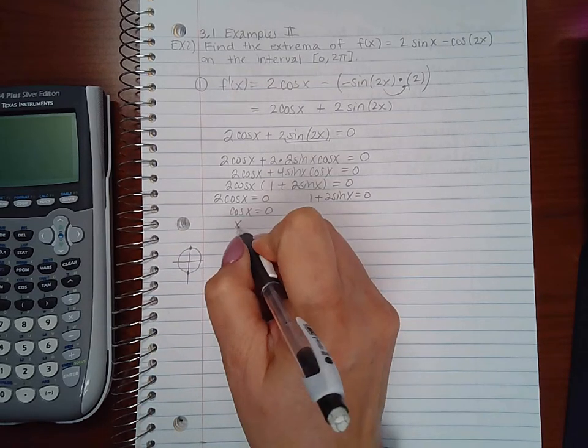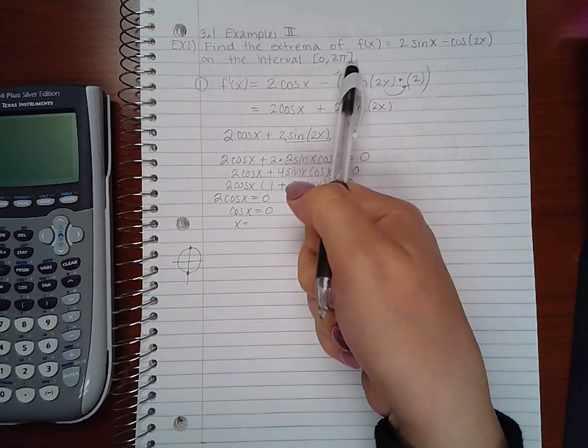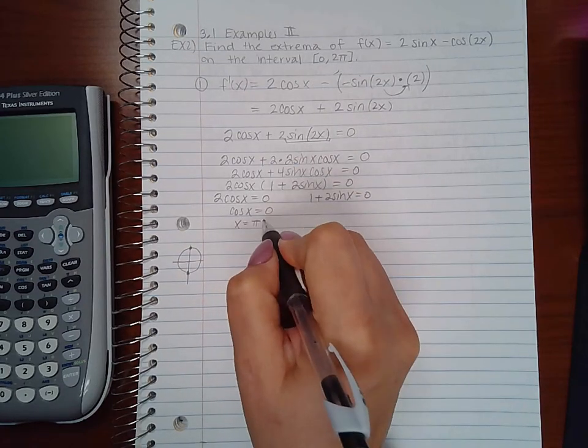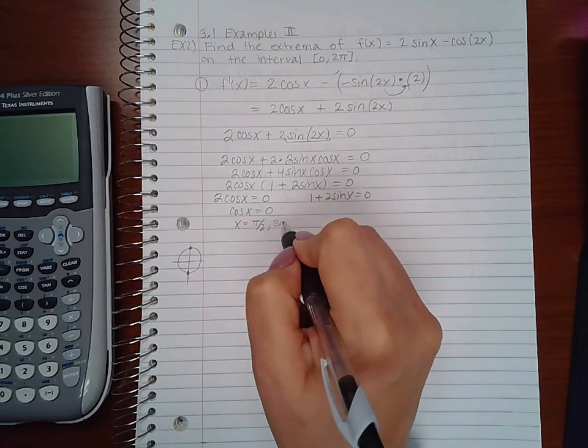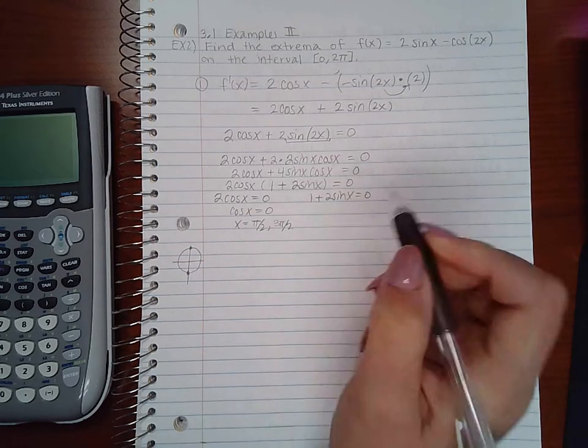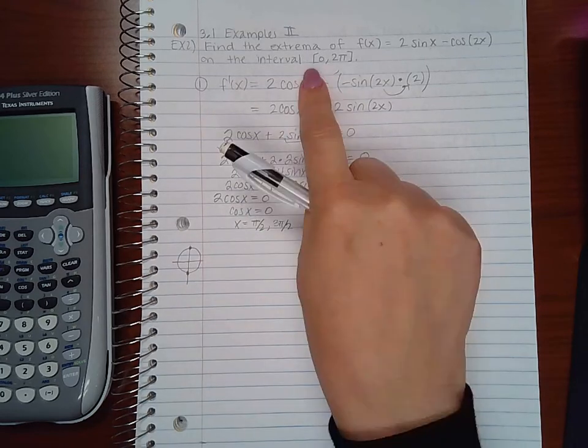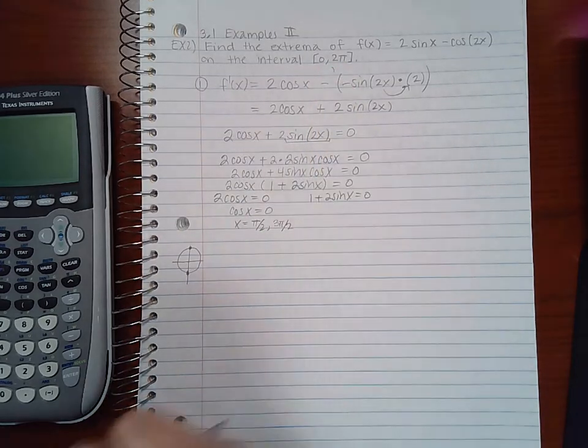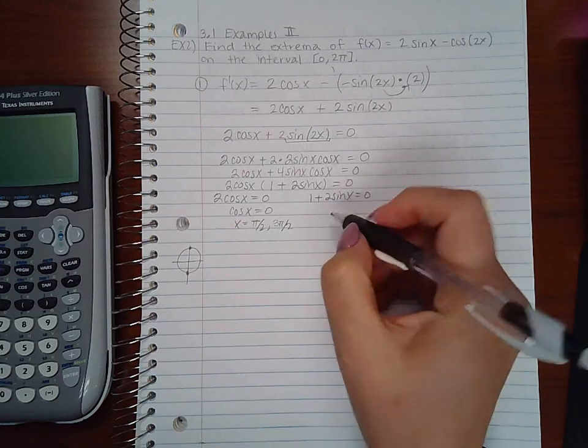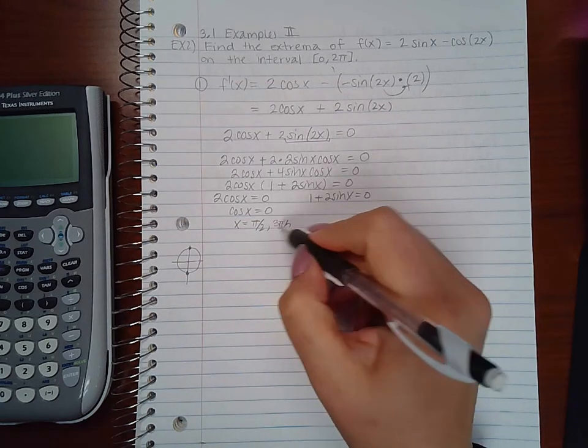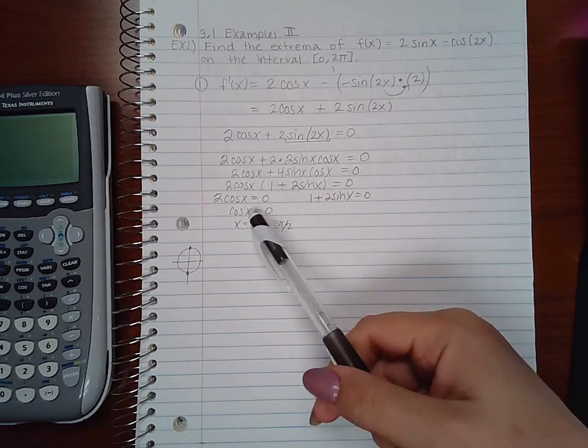And those angles in 0 to 2π are π/2 and 3π/2. You cannot use -π/2 because -π/2 would not be in this interval. So those are the only two critical numbers I get from this factor.